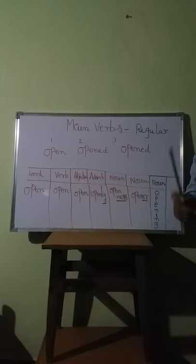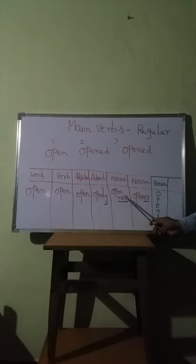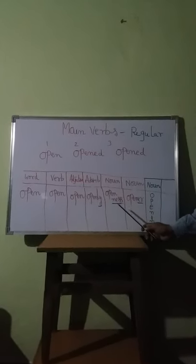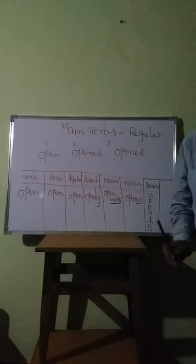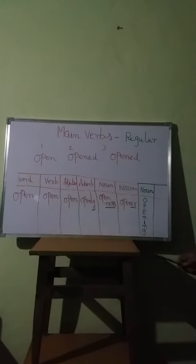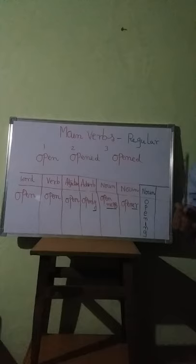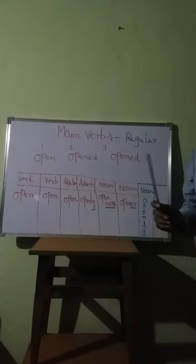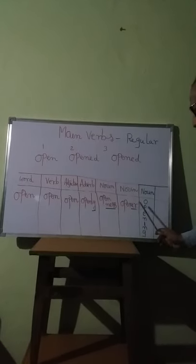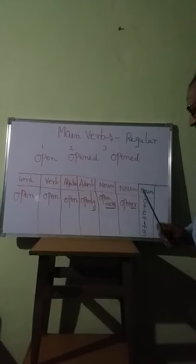Sometimes, 'open' can be a noun by adding the suffix '-ness' to it. 'Openness' is a noun. In the same way, it can be a noun by adding the suffix '-er.' Now, let us know the meanings of these words.